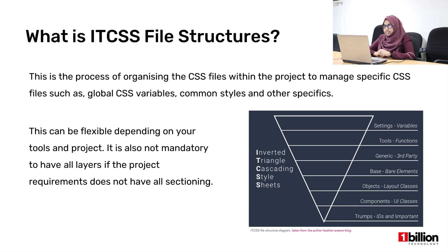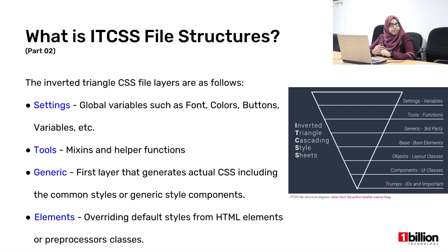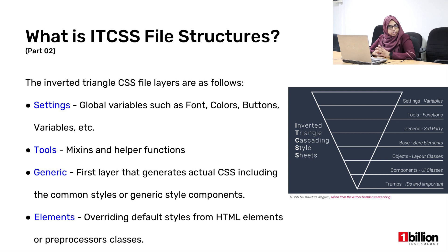Moving on to what each layer is: you have the settings layer where you include global variables — colors, fonts, and button styles. Those are the variables that will be used throughout the site, which is why it's at the top layer. Then we have the tools layer, which are mixins and helper functions to help make the site more responsive. If it is a mobile screen, sometimes you might have different functionality to integrate, so you can have those styles in the tools layer.